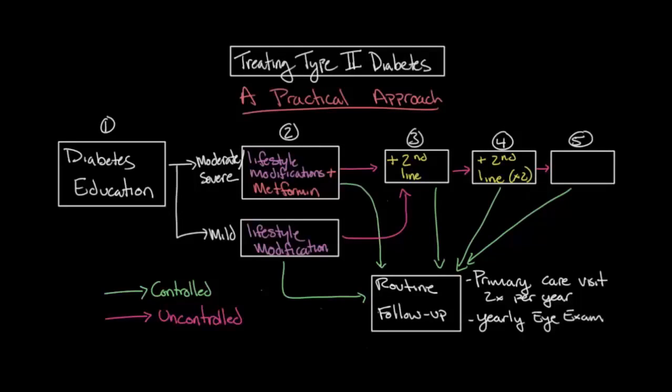Then the fifth and last step is that if an individual with type 2 diabetes cannot control their condition with metformin and two additional second-line medications, then insulin should be added to their treatment regimen. And then the dose should be adjusted accordingly until he or she is able to maintain normal blood glucose levels.